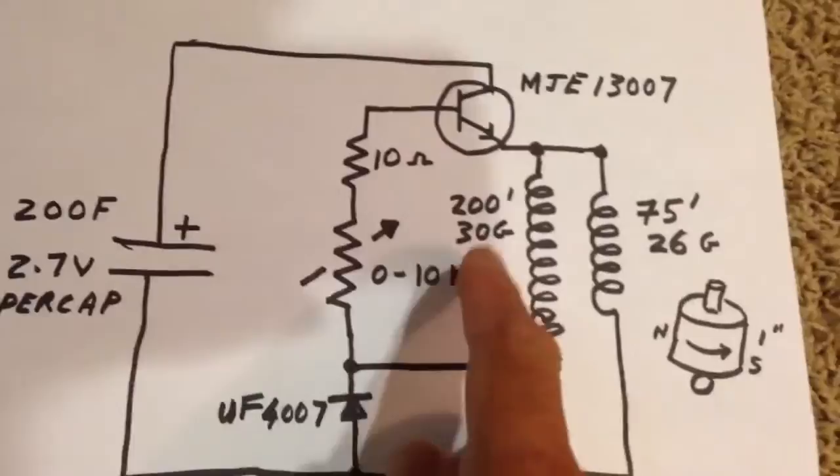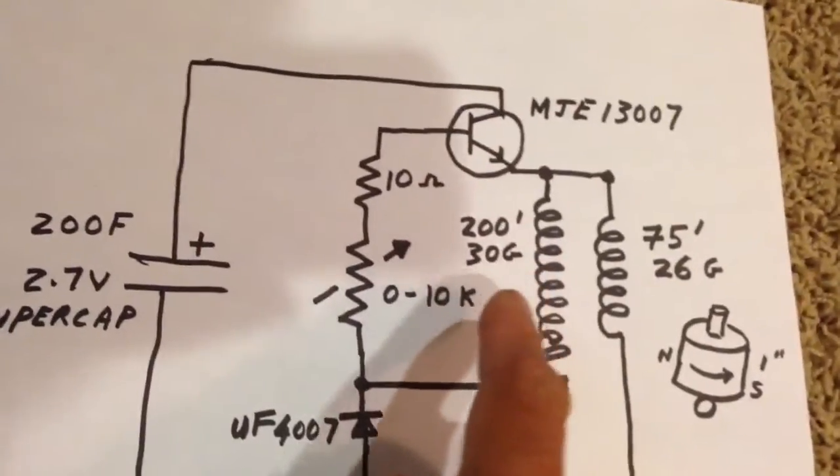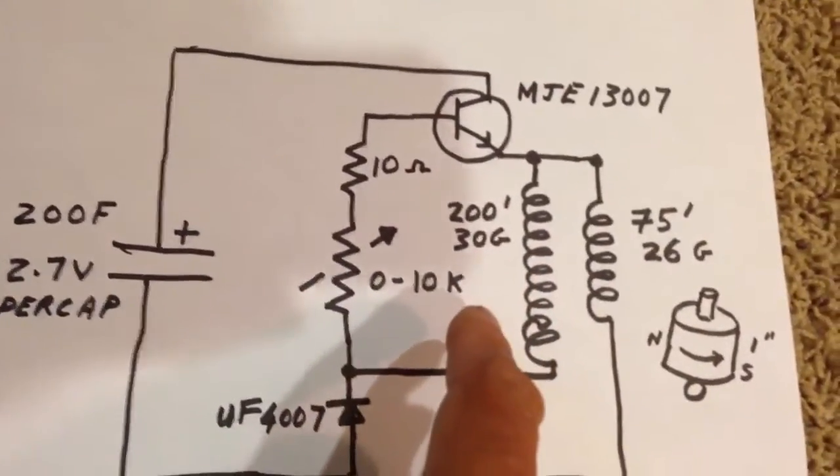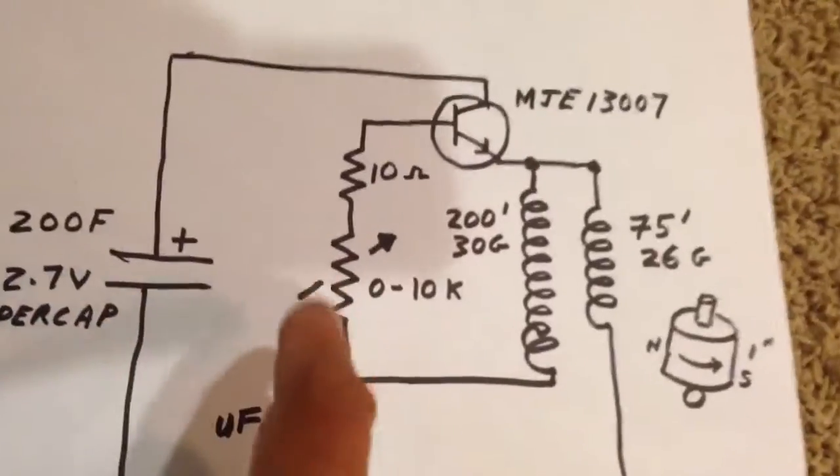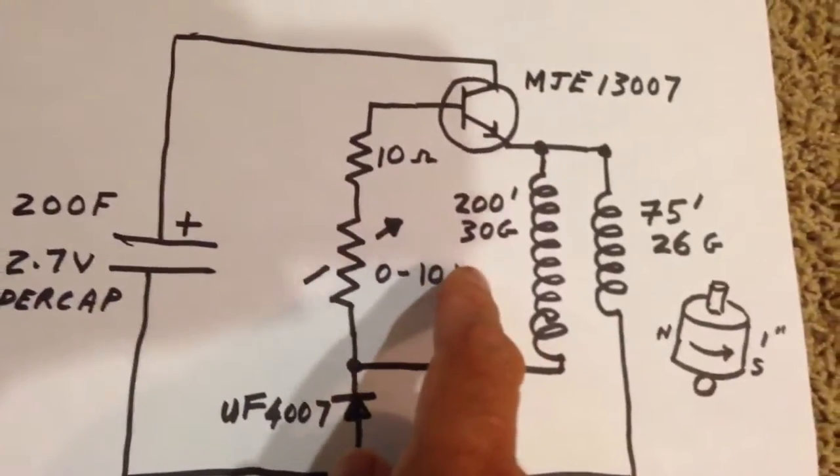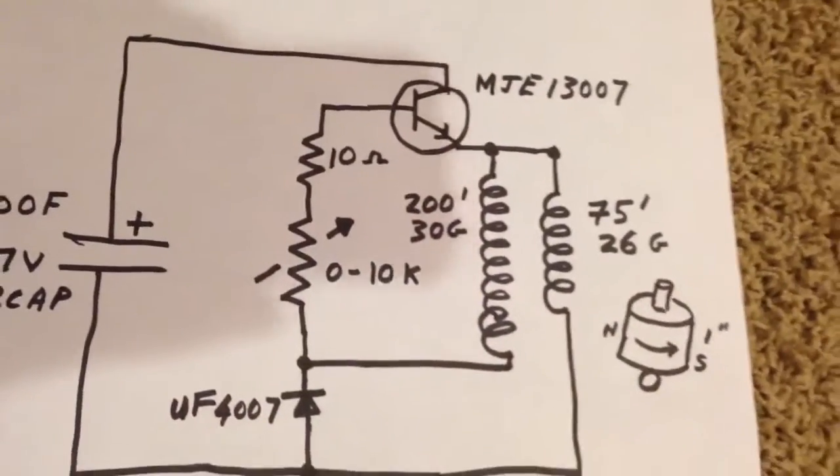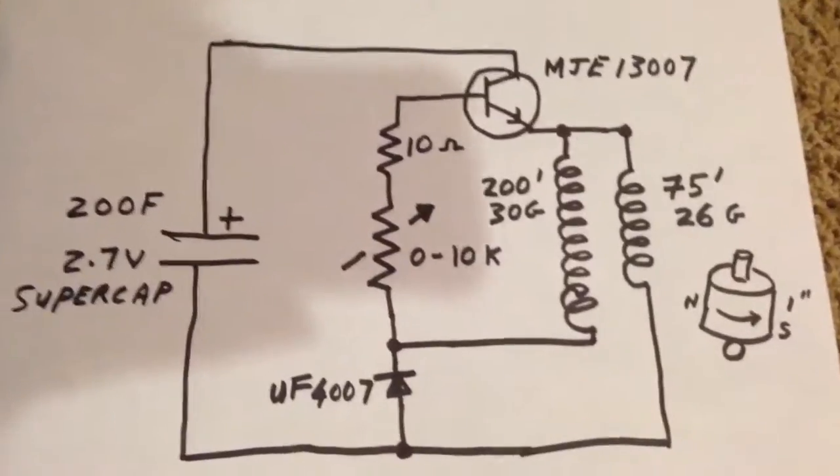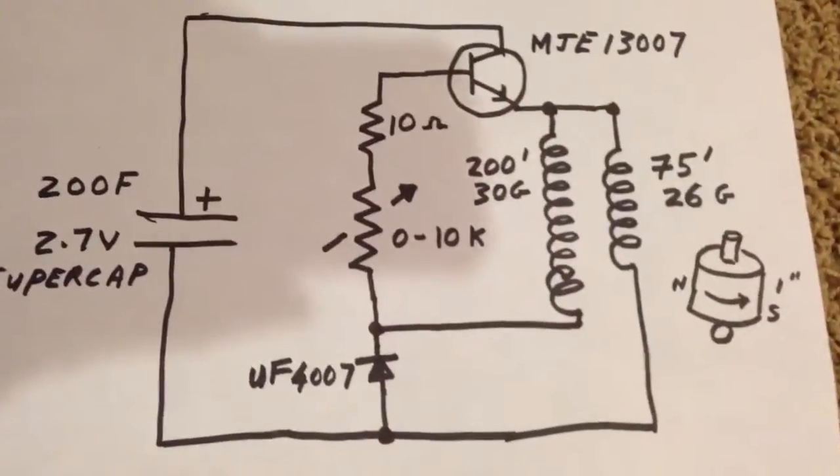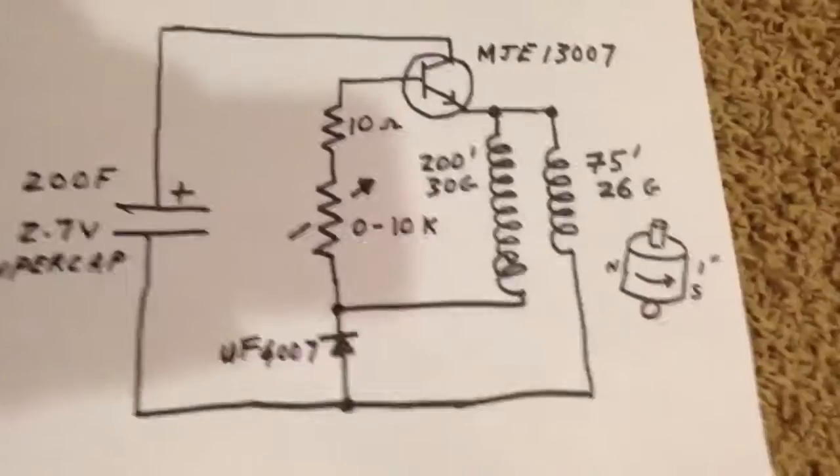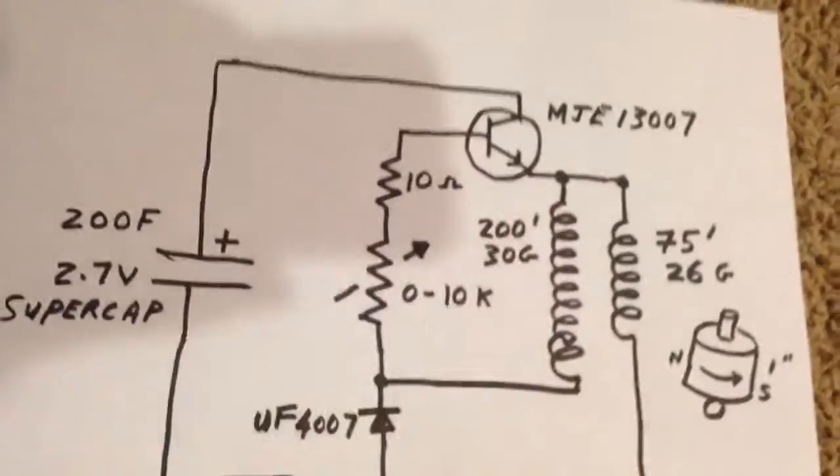The coil is the same as a bifilar coil that's wound the same way that you would wind a joule thief, and the way that Lidmotor did it, it was 200 feet of 30 gauge and 75 feet of 26 gauge wound together on basically a hook-up wire spool that you can get from RadioShack. Just wind it all together and join the ends like that.